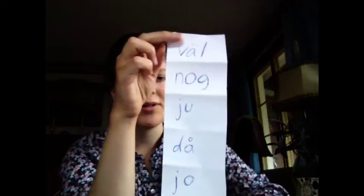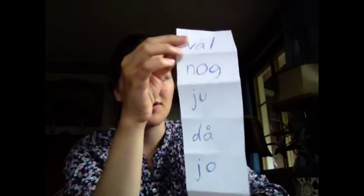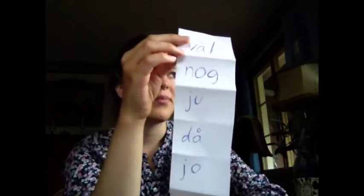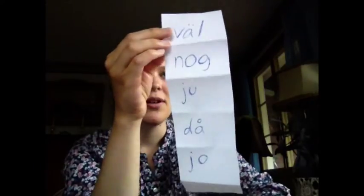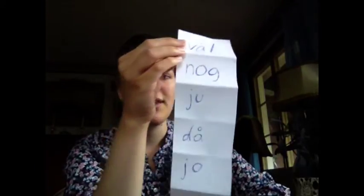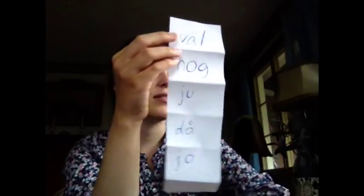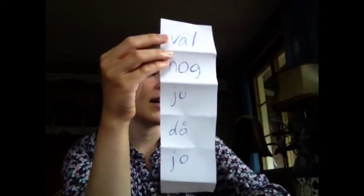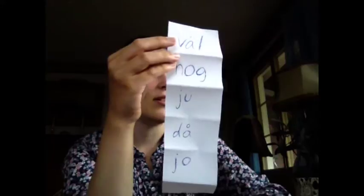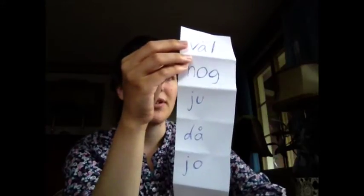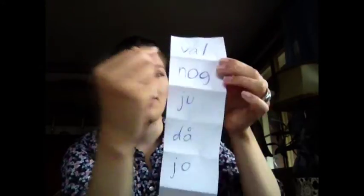I can also take the opportunity to teach you some Swedish. Today I'm going to teach you some words that are quite small and don't mean much on their own, but they are used in sentences to convey a certain meaning or to add a certain level of certainty or uncertainty. The words are: väl, nog, ju, då, jo.